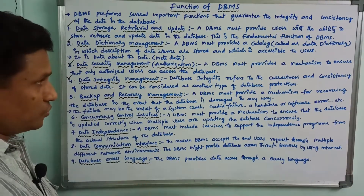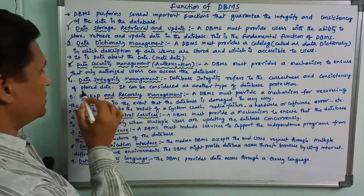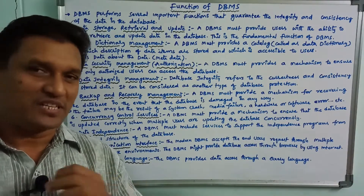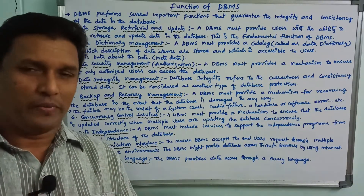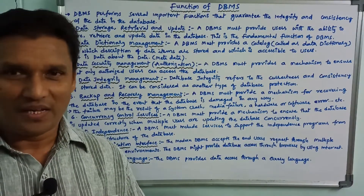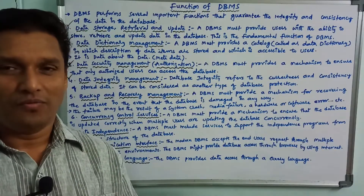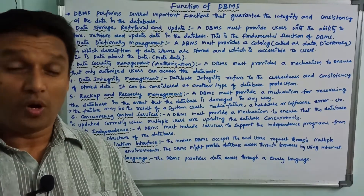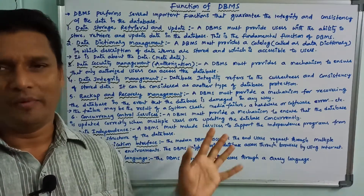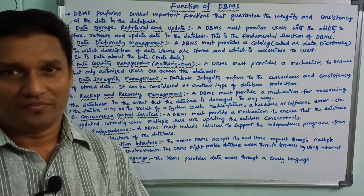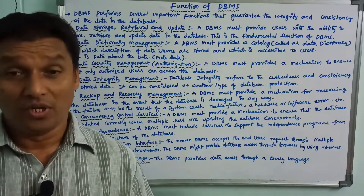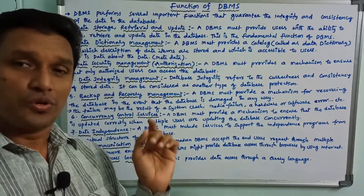Next is data integrity management. Database integrity refers to the correctness and consistency of stored data. It can be considered as another type of database protection. Database integrity means rules and regulations are applied in a proper way. If the data is correct and proper, then there is consistency. We need to maintain database consistency. Database integrity management is very important for DBMS and this is a core function of DBMS.